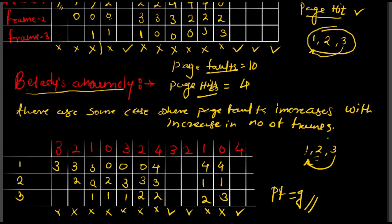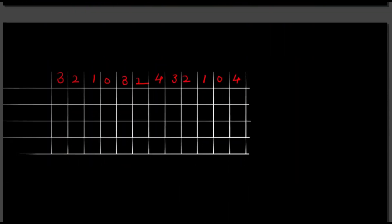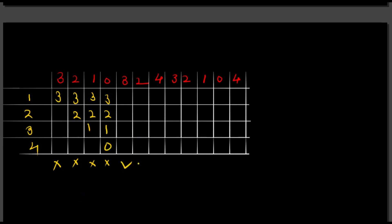Now we check the same sequence but with 4 frames. With 4 frames: 3 loads — page fault; 2 loads — page fault; 1 loads — page fault; 0 loads — page fault. Memory now has 3, 2, 1, 0. Next, 3 is required — already present, page hit. Next, 4 is required — not present, page fault. Replace frame 1: memory becomes 4, 2, 1, 0. Next, 3 is not present — page fault, replace frame 2: memory becomes 4, 3, 1, 0. Next, 2 is not present — page fault.